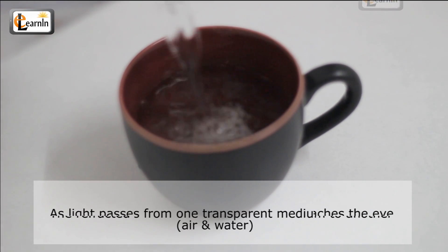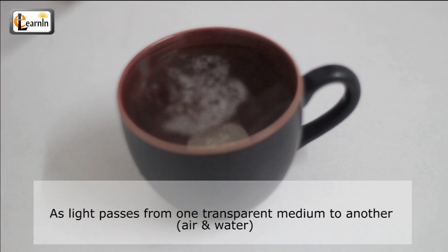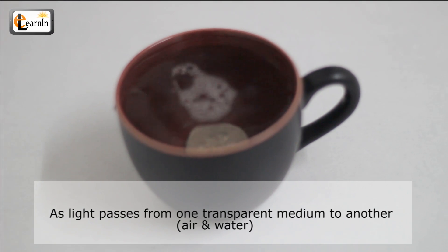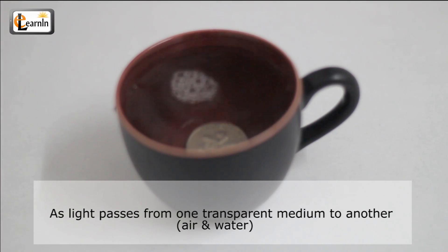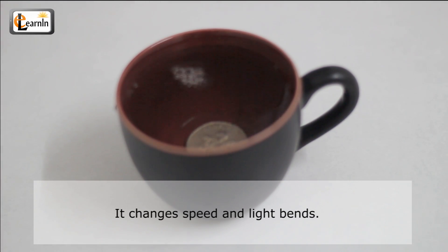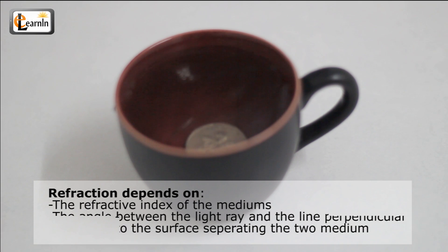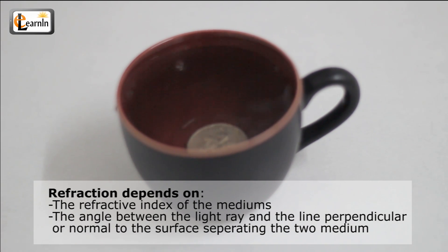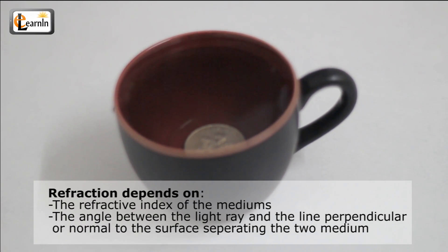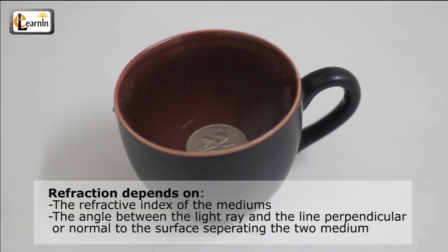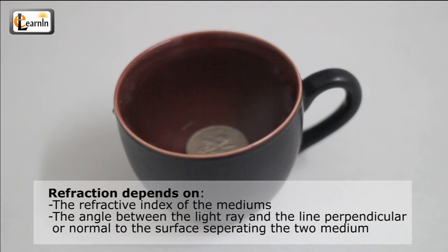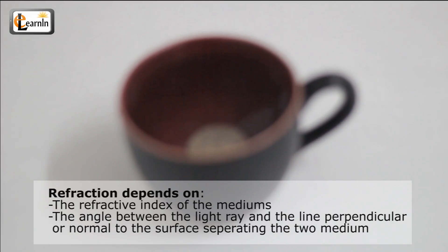As light passes from one transparent medium to another — here air and water — it changes speed and light bends. The extent of this depends on the refractive index of the mediums and the angle between the light ray and the line perpendicular, or normal, to the surface separating the two media.